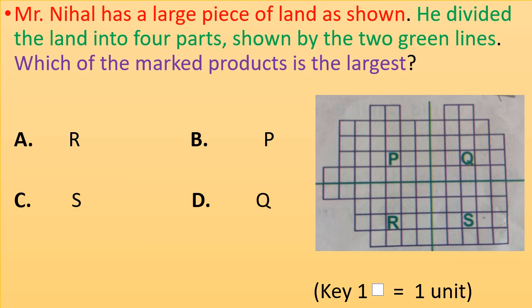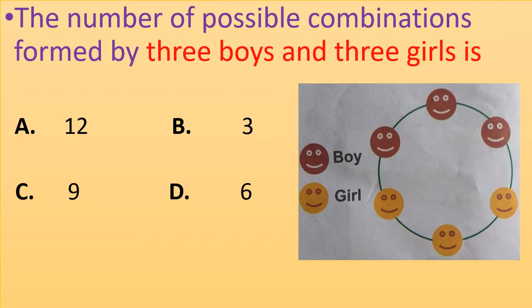The number of possible combinations formed by three boys and three girls is: A. 12, B. 3, C. 9, D. 6. Look at the picture now. Take your time and answer the question.